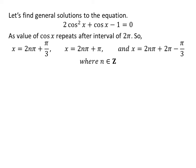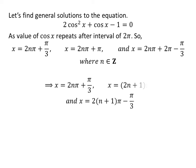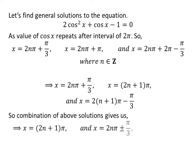Let us find the general solutions. As we know, the value of cosine of x repeats after an interval of 2 times pi, so the general solutions are 2 times n times pi plus pi upon 3, 2 times n times pi plus pi, and 2 times n times pi plus 2 times pi minus pi upon 3, where n is an integer. Further simplification gives us the general solutions: 2 times n times pi plus pi upon 3, 2 times n plus 1 times pi, and 2 times n plus 1 times pi minus pi upon 3. Combining these, the general solutions are 2 times n plus 1 times pi and 2 times n times pi plus or minus pi upon 3.